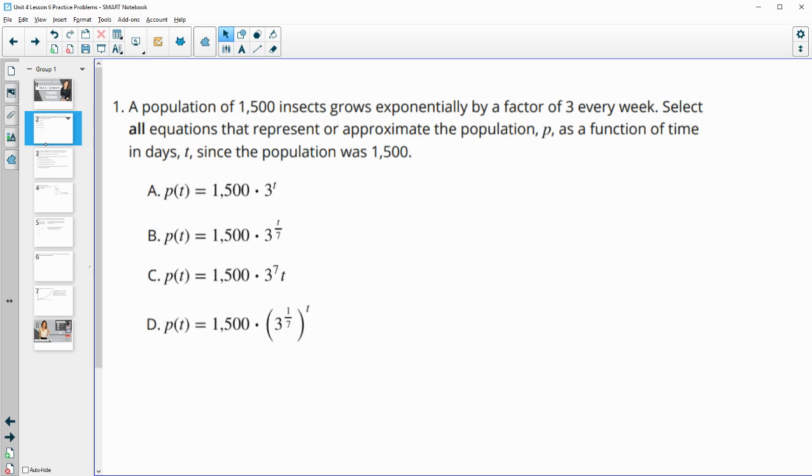Number one says a population of 1,500 insects grows exponentially by a factor of three every week. Select all equations that represent or approximate the population P as a function of time in days since the population was 1,500.